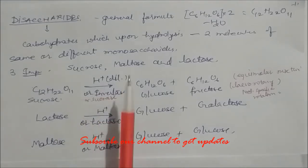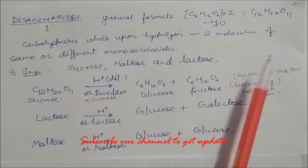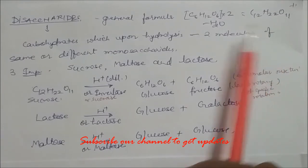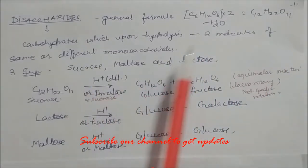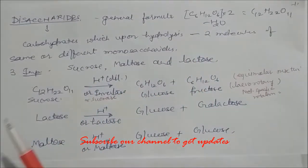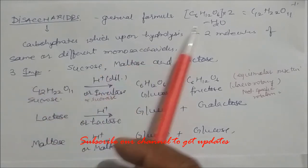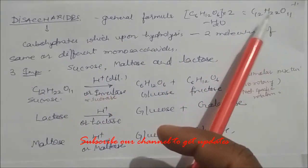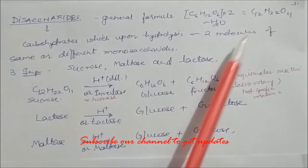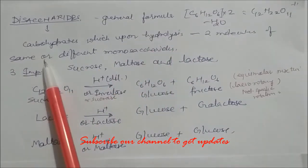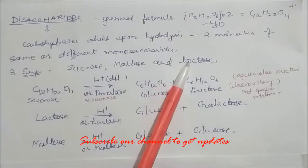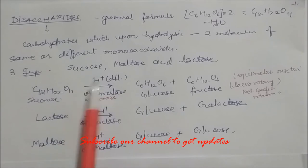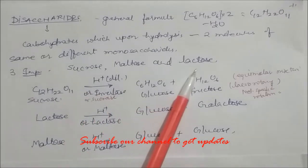Disaccharides have the general formula C₁₂H₂₂O₁₁. They are formed by condensation of two glucose molecules with elimination of one water molecule. On hydrolysis, a disaccharide gives two molecules of the same or different monosaccharides. Important disaccharides include sucrose, maltose, and lactose.